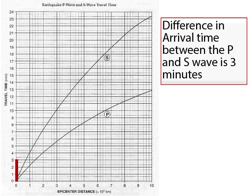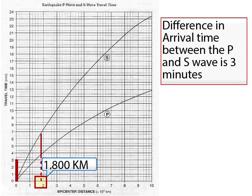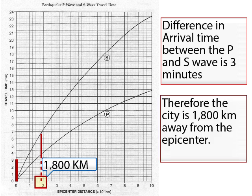I slide along the P and S wave chart until I find exactly where three minutes fits. Now I drop a line straight down that little dotted line. I put a little box around it — that's 1,800 kilometers. Therefore, we now know the city is 1,800 kilometers away from the epicenter.